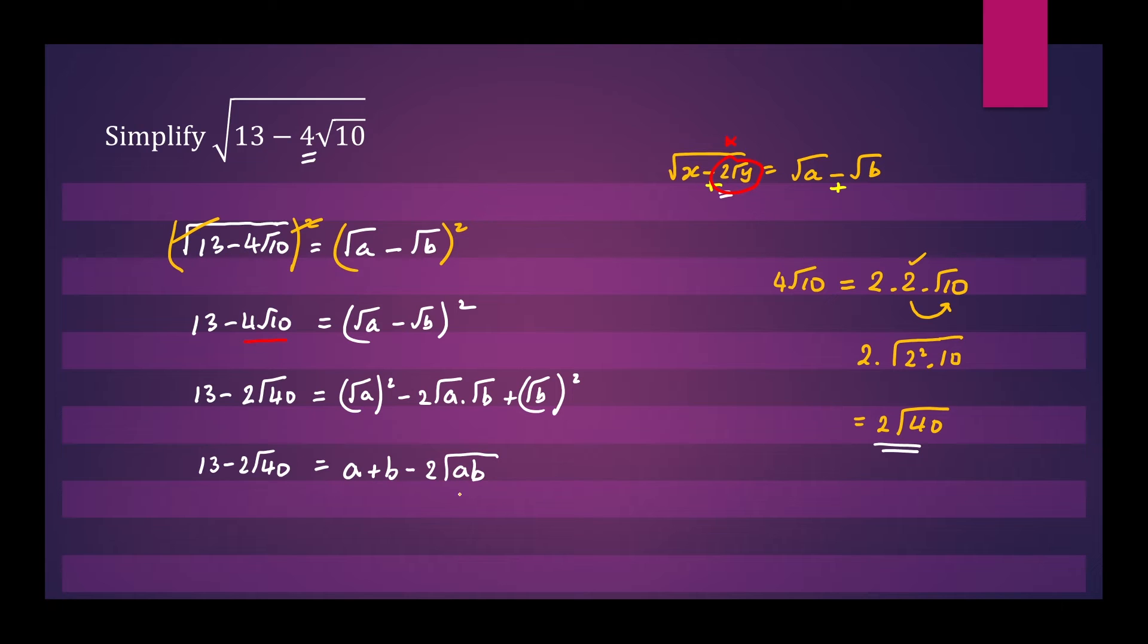So when we compare both sides we have ab equal to 40 and a plus b will be equal to 13. So we have two simultaneous equations. We have a plus b equals 13 as the first equation and ab equals 40 as the second equation.